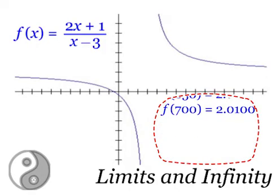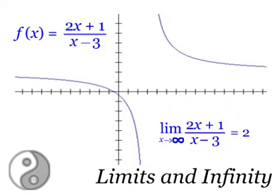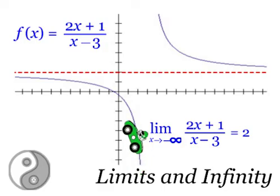Now mathematically, this means that the limit as x approaches infinity of f equals 2. By the way, the limit as x approaches negative infinity of f also equals 2. As we travel left along the x axis, the function approaches the same height.